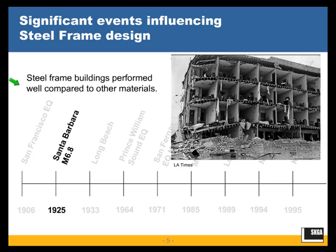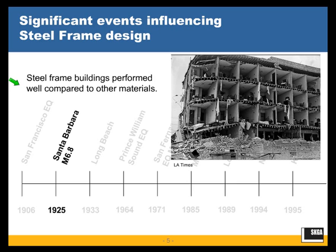The Santa Barbara earthquake was a magnitude 6.8, and again the steel frames were still riveted — no welded moment frames just yet. It wasn't until the 1930s to 1940s that welding procedures started to come into the market. The Santa Barbara earthquake also occurred around the same time that the Uniform Building Code incorporated seismic design provisions, which is how designers started to have a recognized procedure for seismic design.